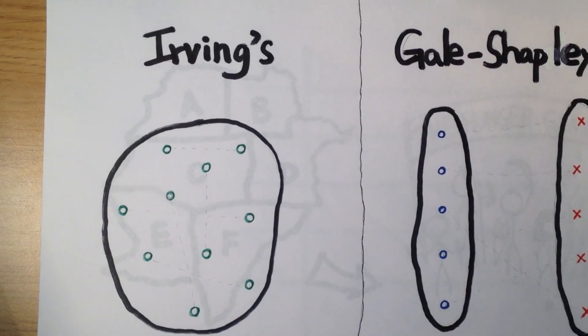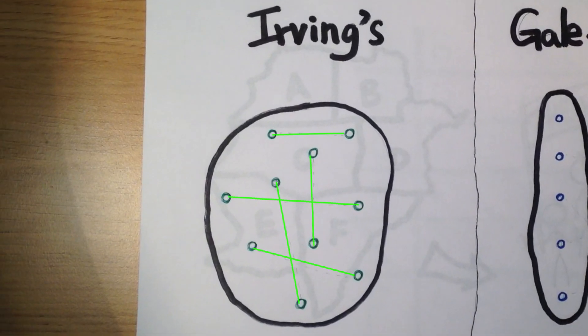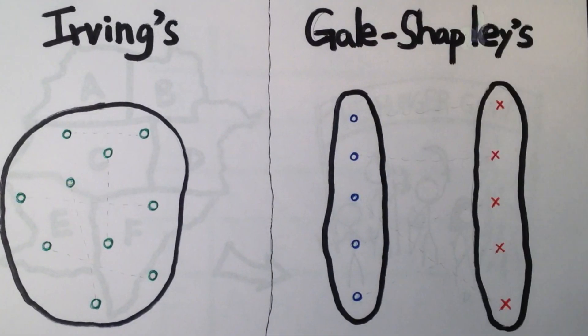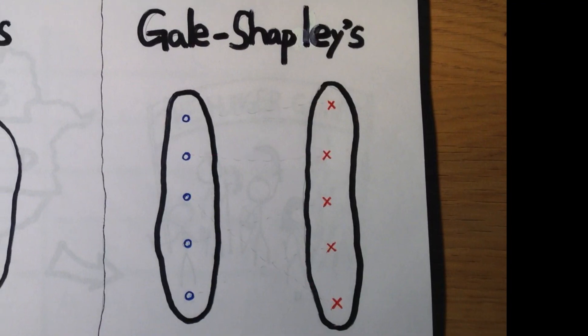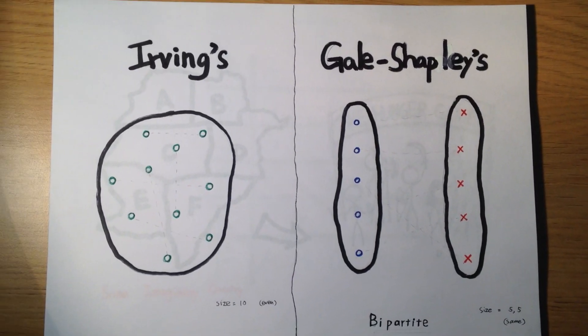Irving's algorithm pairs elements of the same set. This differs from the Gale-Shapley algorithm, which forms pairs across two sets.